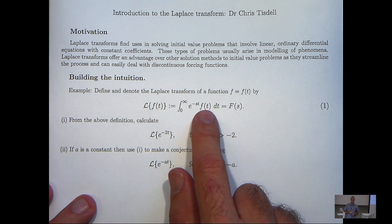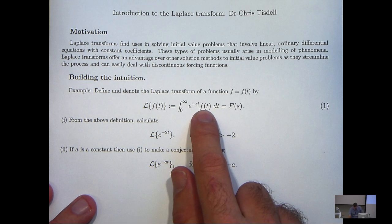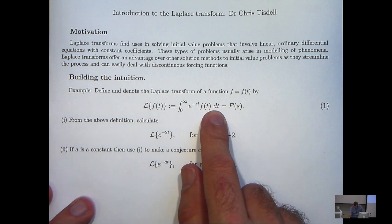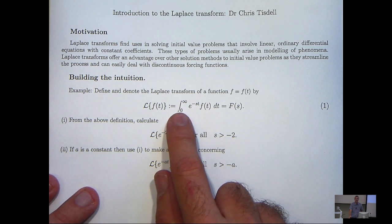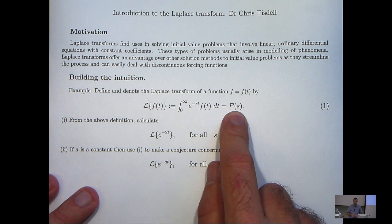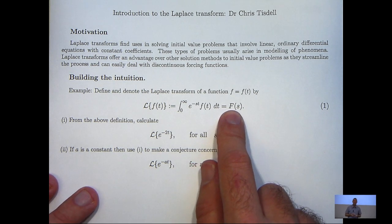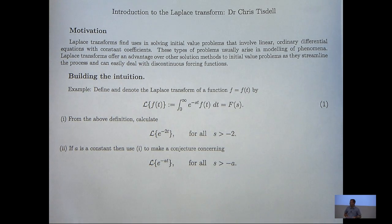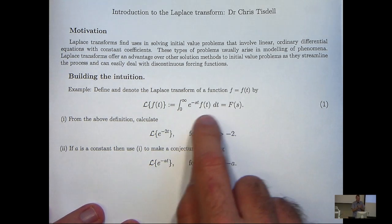Now, you can also see that t here is known as the dummy variable because it disappears as we are integrating with respect to t. But the s doesn't disappear. So this whole expression is actually a function of s. Now, sometimes we denote the Laplace transform of little f by this big F. So, capital letters and lowercase letters in general denote respectively the Laplace transform and the original function.